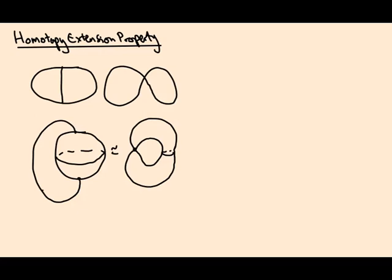Just by squishing this one cell down to a single point. So that kind of argument you can formalize using the homotopy extension property. So what is the homotopy extension property?